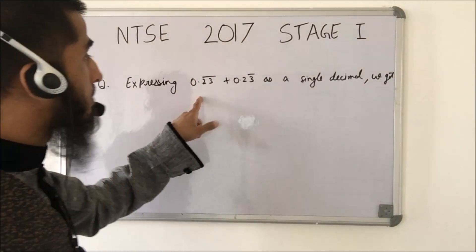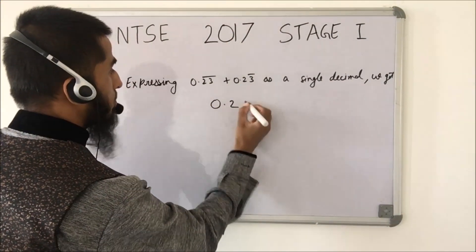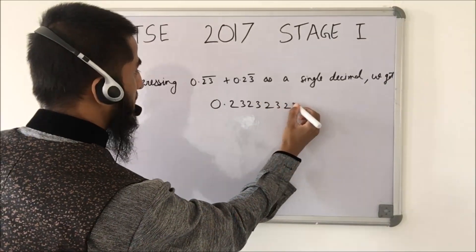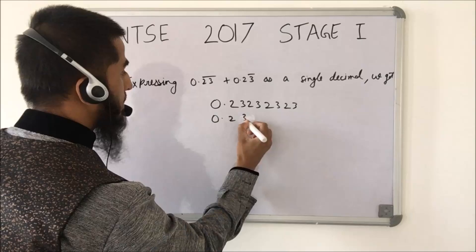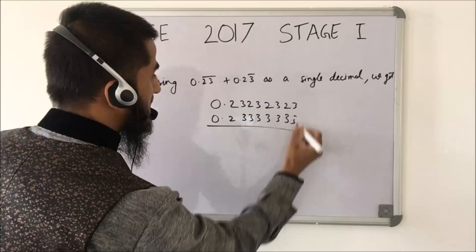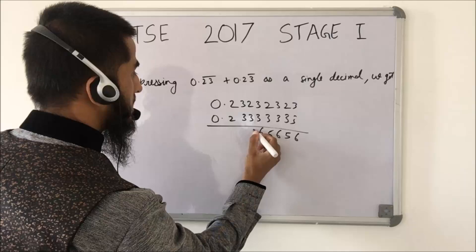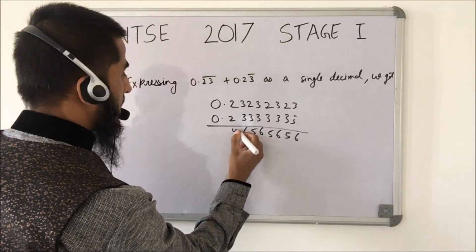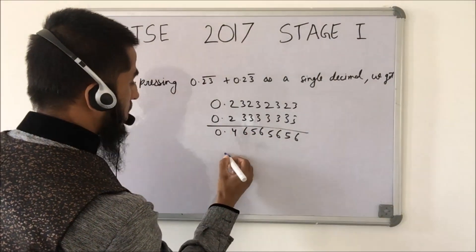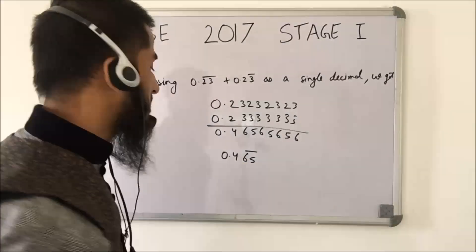In this question, we are required to express the sum of two decimals as a single decimal. 0.2̄3̄ means 2, 3 repeating, and 0.23̄ means 3 is repeating. If we add them, we can see the digits alternate as 6, 5, 6, 5, 6, 5 and so on, ending in 4. So the answer is 0.465̄, which is the correct answer.